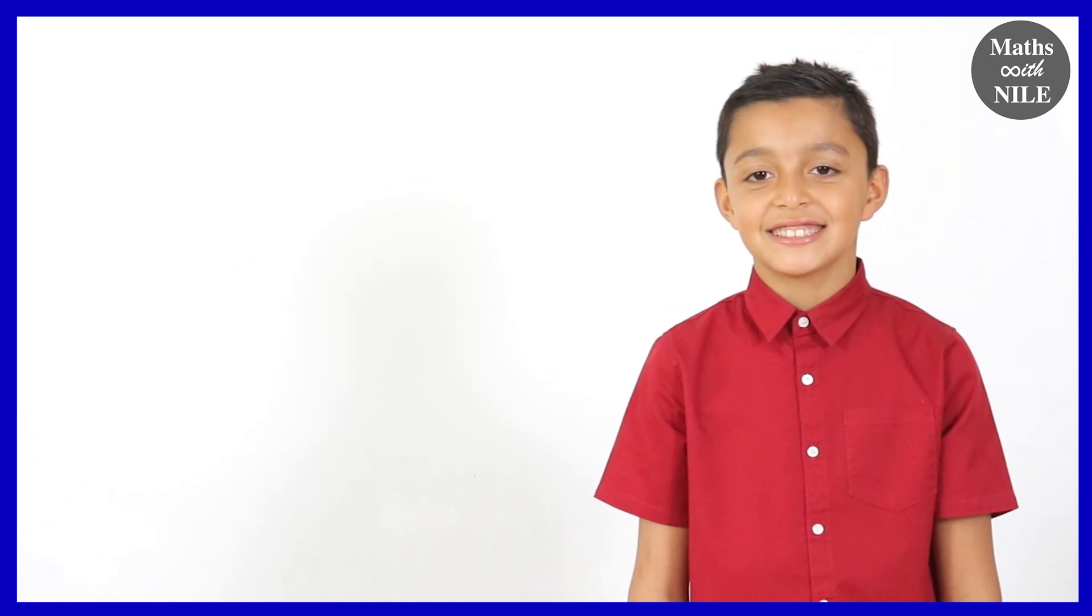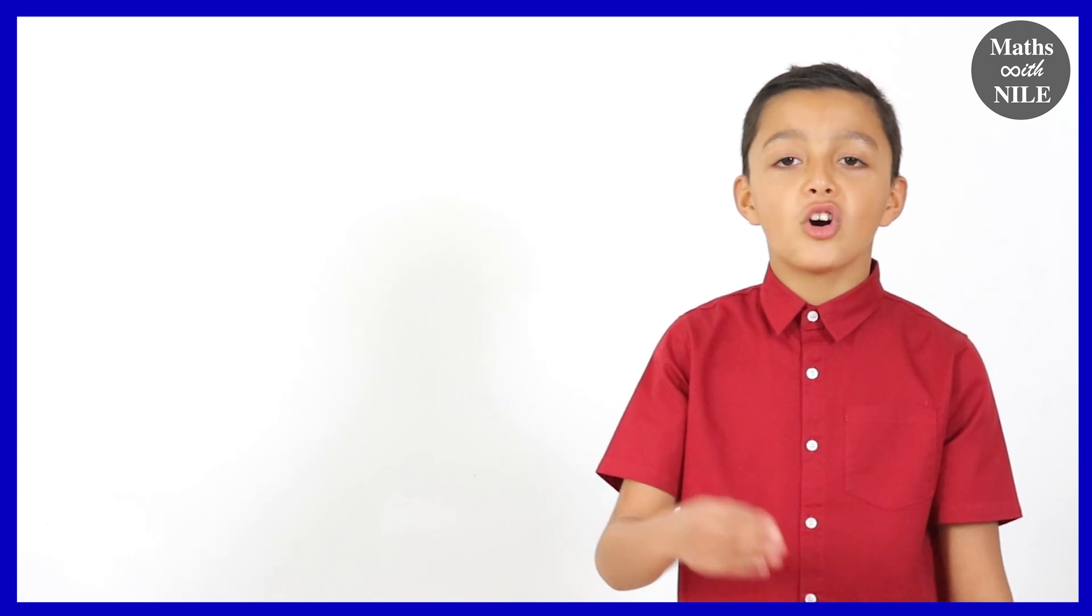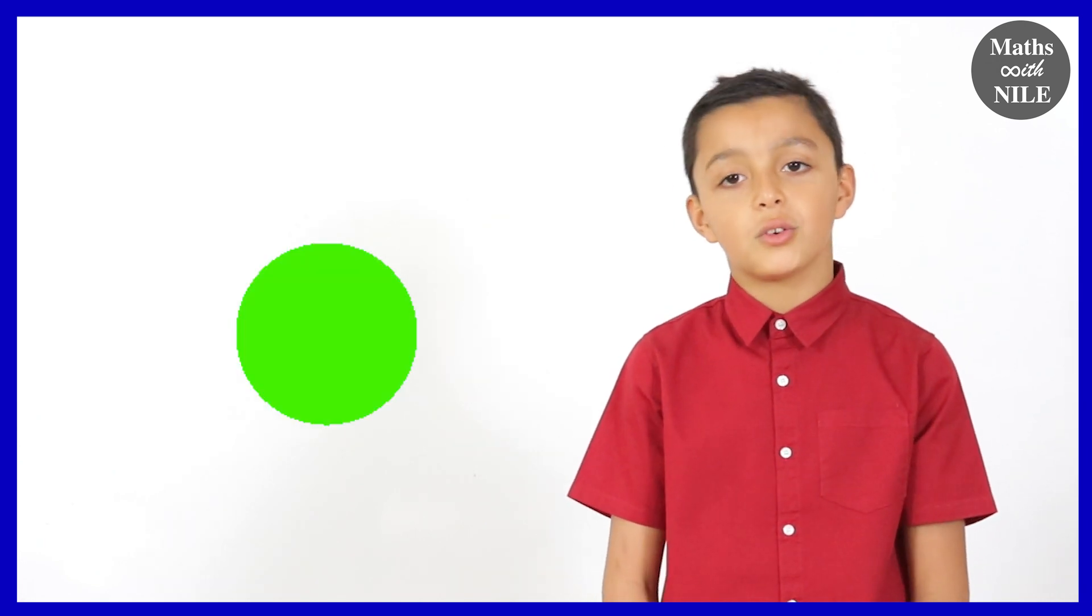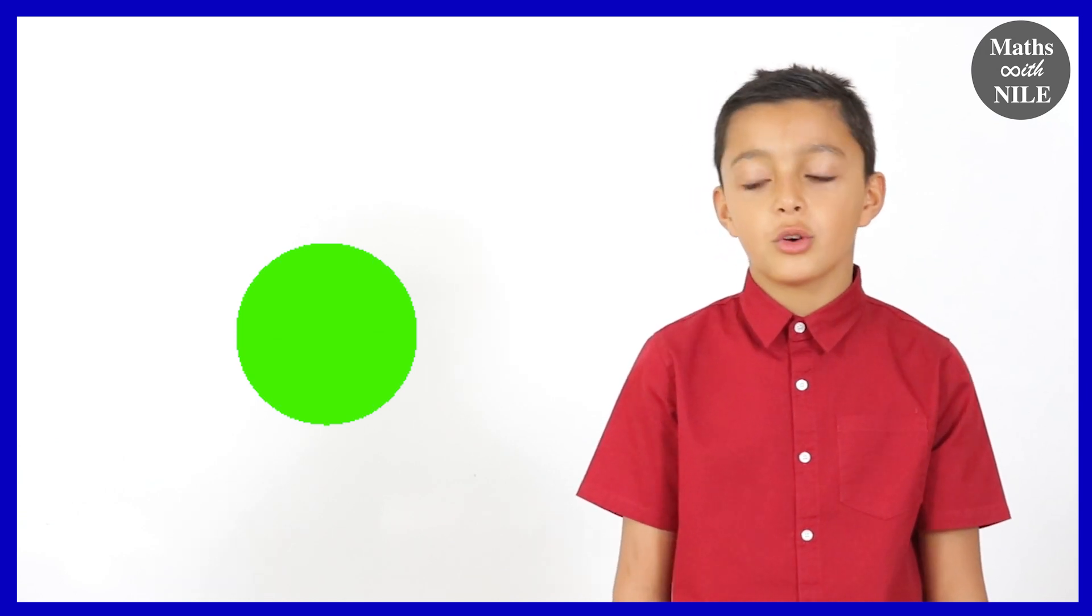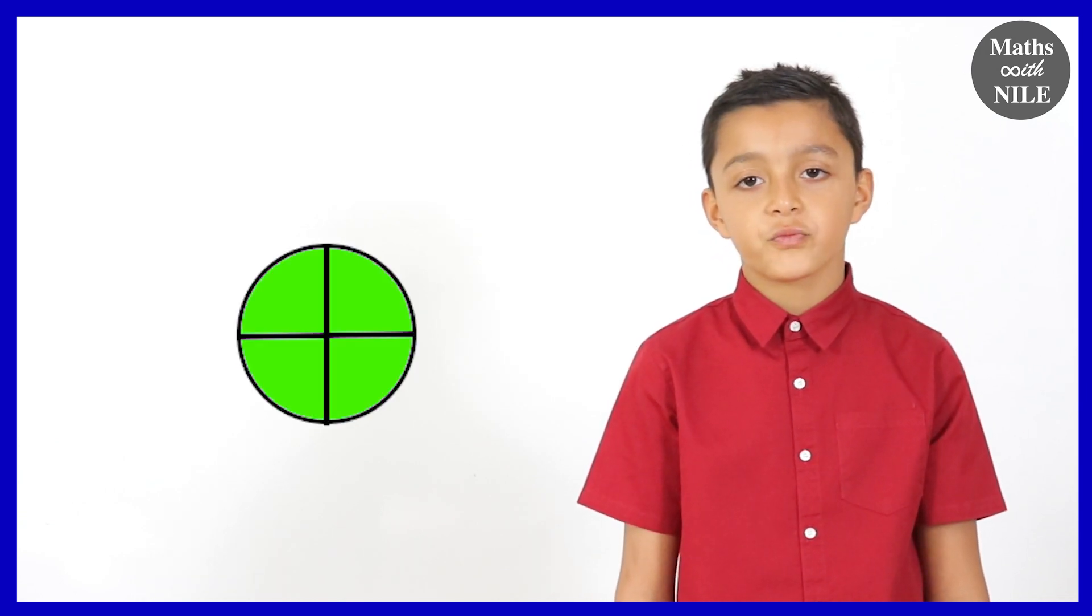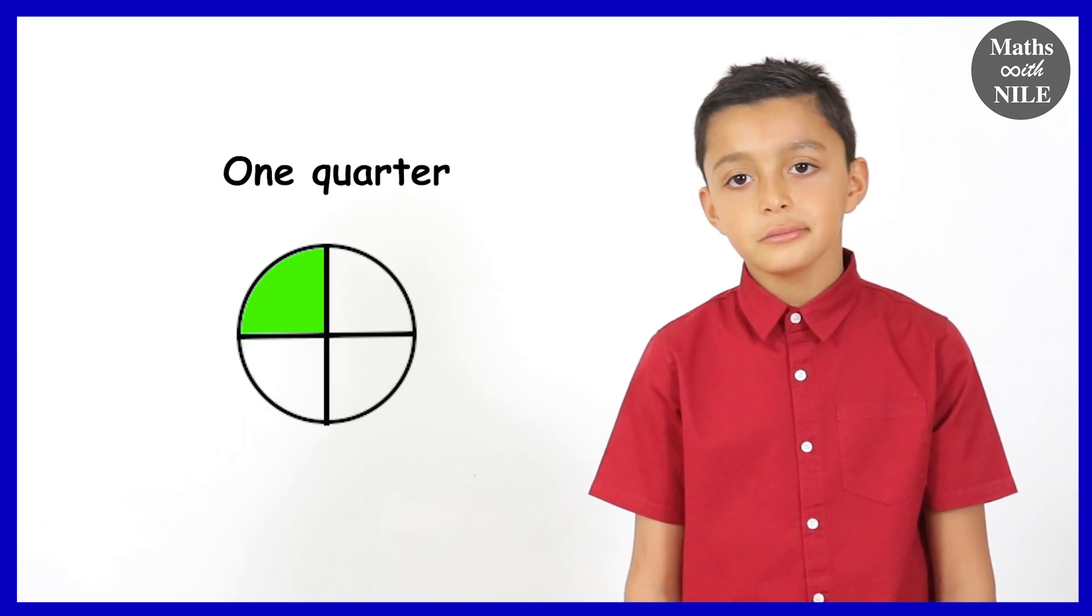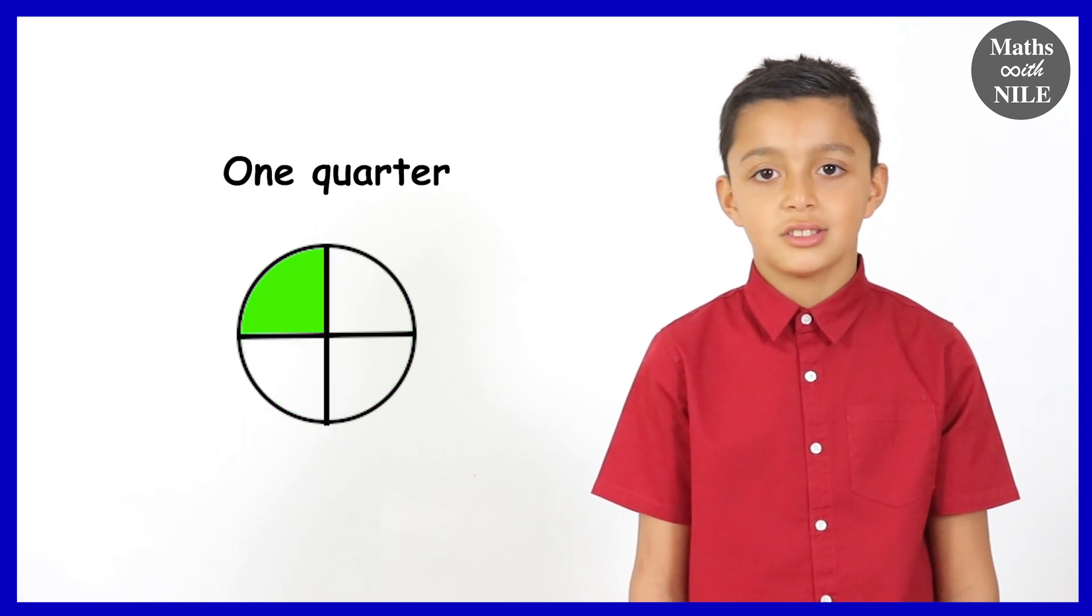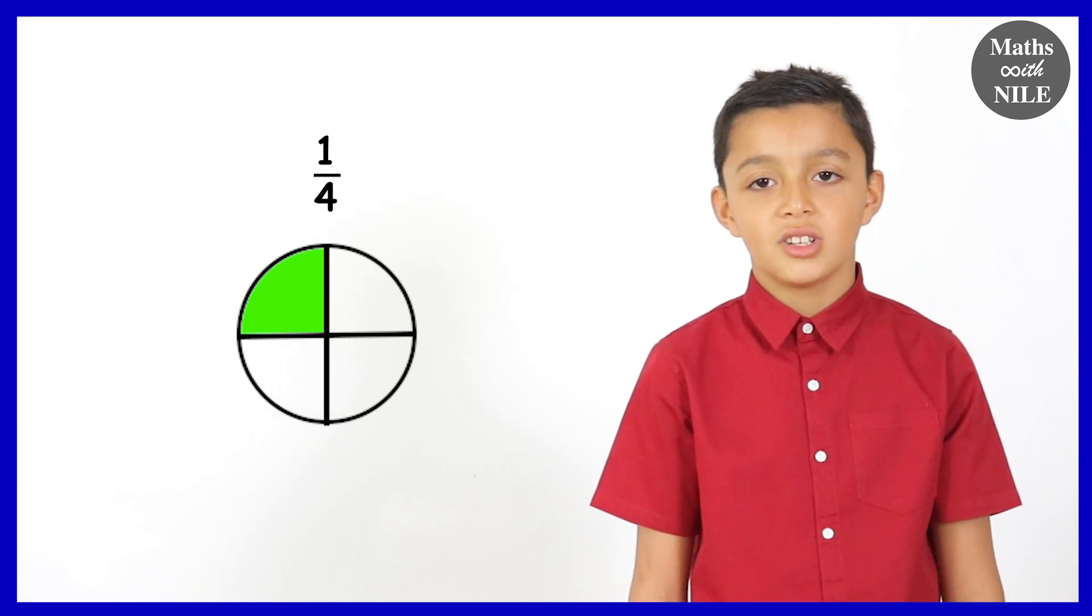So now, can you describe to us what is one quarter? A quarter is, if you get your whole, you half it and half that half again, you get a quarter. What's another way we can get a quarter? You divide the whole into four equal parts. That's it. Divide a whole into four equal parts and one of these parts is a quarter. And how do we write one quarter? One over four. Good.